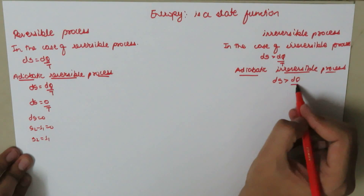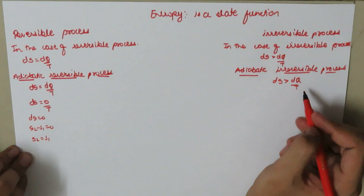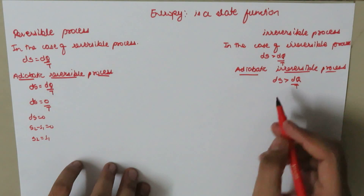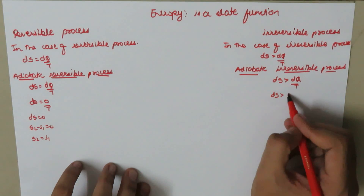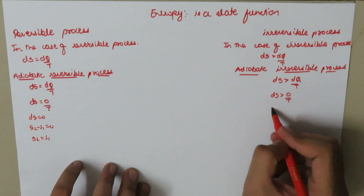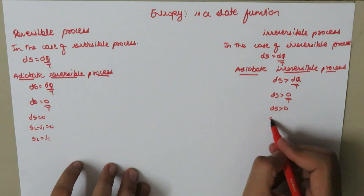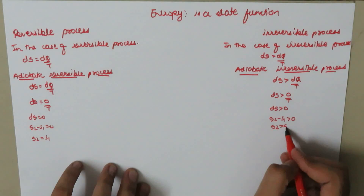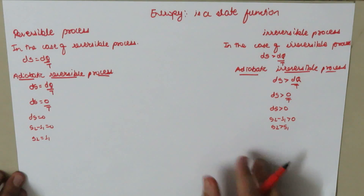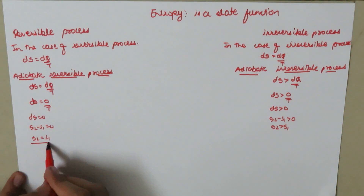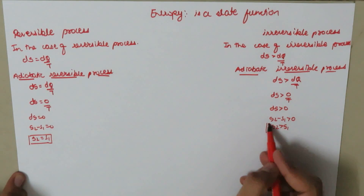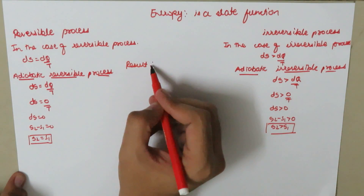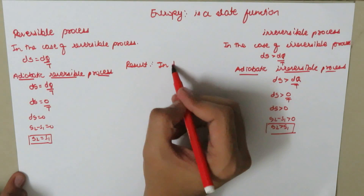For the adiabatic irreversible process, we know that dS should be greater than dQ over T, and dQ is equal to 0 in the case of the adiabatic process. So dS should be greater than 0, meaning S2 minus S1 is greater than 0.